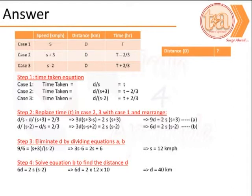The next step is to eliminate d and solve only for the variable s. On solving, we find s = 10 km per hour.